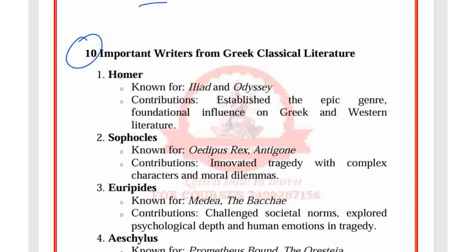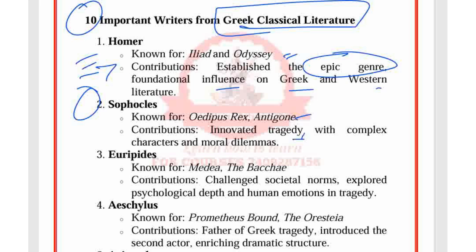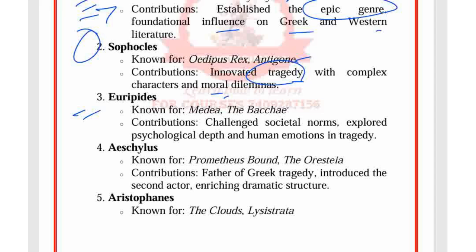Among the ten important writers from Greek classical literature, first is Homer, known for the Iliad and Odyssey. He established the epic genre and had a foundational influence on Greek and Western literature. Second is Sophocles, known for Oedipus Rex and Antigone, who innovated tragedy with complex characters and moral dilemmas. Third is Euripides, known for Medea, who challenged societal norms and explored psychological depth and human emotions in tragedy.